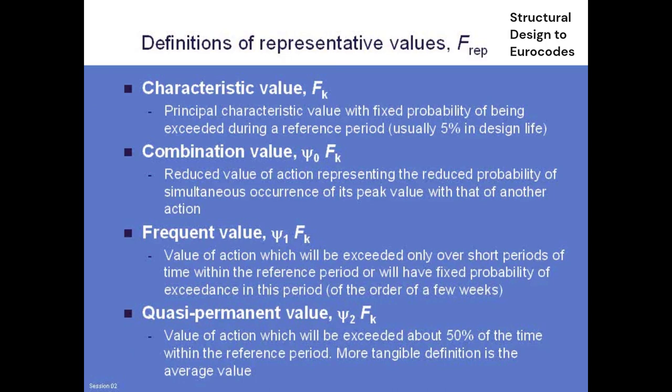For example, psi_2 for traffic loading is 0. That's saying the average value of traffic on a structure at any time is effectively zero — it's so small compared to the full characteristic value it may as well be 0. This has very significant effects: when we check crack widths for reinforced concrete, we check in the quasi-permanent combination, which means we check crack widths without any traffic. However, temperature does have an average value — psi_2 for temperature is 0.5 — so when doing crack width checks, we do have to allow for temperature.